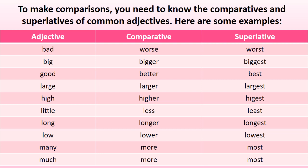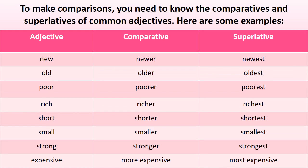More examples of comparative and superlative adjectives: little, less, least; long, longer, longest; low, lower, lowest; many, more, most; much, more, most (for uncountables). Further examples include: new, newer, newest; old, older, oldest; poor, poorer, poorest; rich, richer, richest; short, shorter, shortest; small, smaller, smallest; strong, stronger, strongest; and expensive, more expensive, most expensive. These adjectives will be helpful for comparing data in your paragraph.